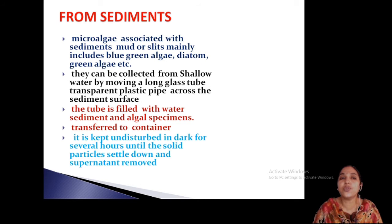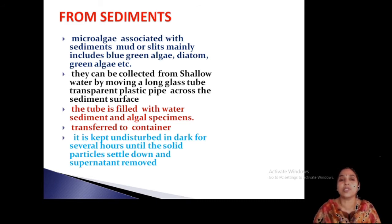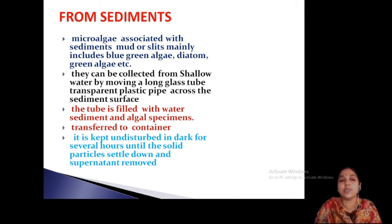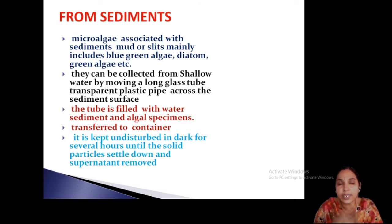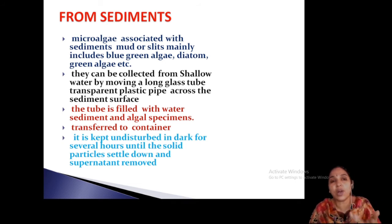From sediments — sediments accumulate at the bottom of water. In such sediments you can find a large number of algae, usually green algae, diatoms, and blue-green algae. From sediments, you can collect samples using glass tubes or plastic pipes injected into the sediment surface. The tube is filled with water and sucked out, and the algal specimens are transferred into a container. That is kept undisturbed in the dark for several hours. The solid particles settle down and the supernatant containing algae is removed. By pressing a pipe into the sediments, the algae-containing water comes out.